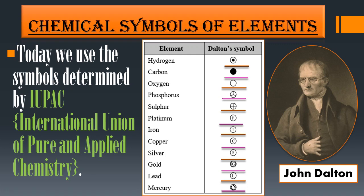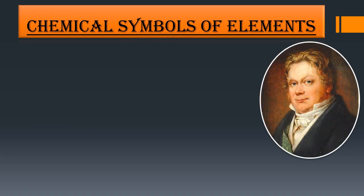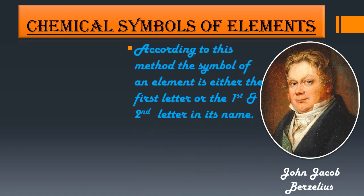The current method of choosing chemical symbols is based on the method of the scientist John Jacob Berzelius, who discovered the chemical symbol system for certain elements.